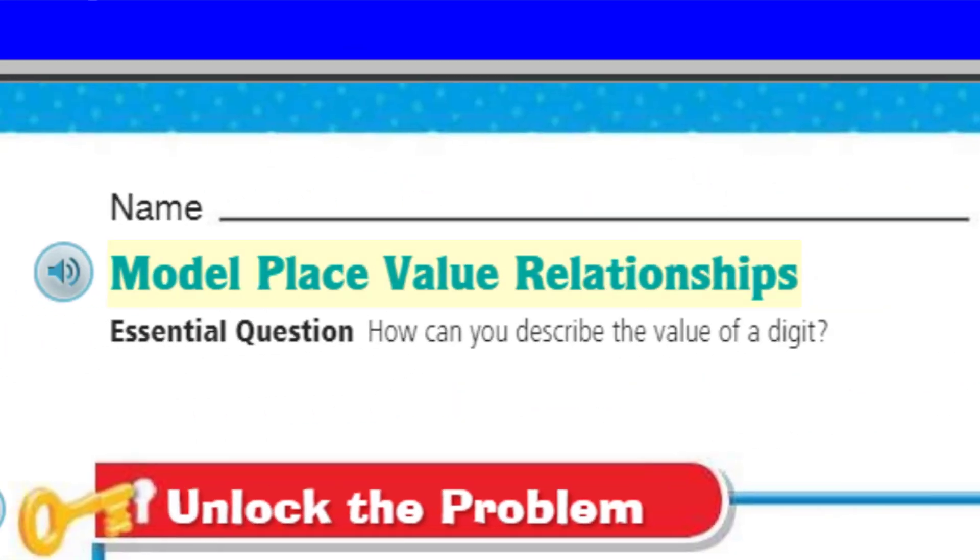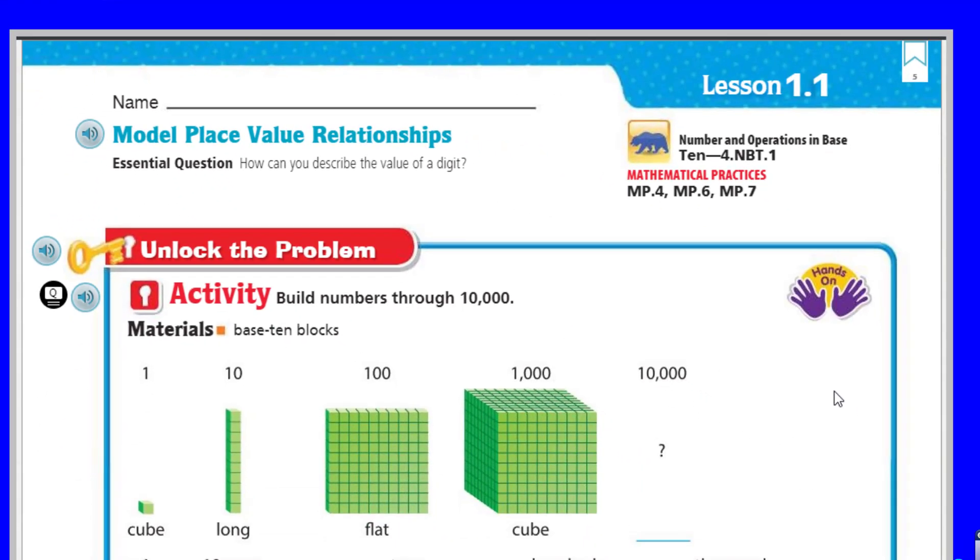As you can see, we have a topic of model place value relationships. We're going to be modeling using our base-10 blocks. Our essential question, this is our learning target, the objective of this lesson: how can you describe the value of a digit? The materials that we're going to need today are base-10 blocks.